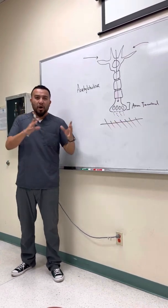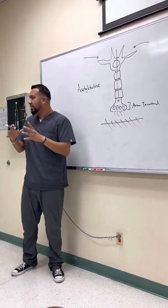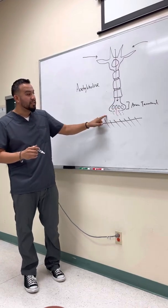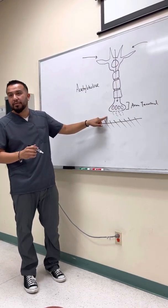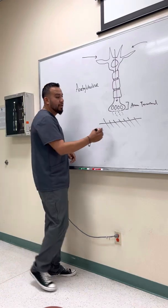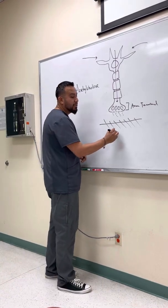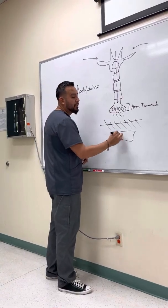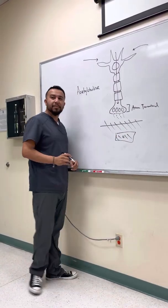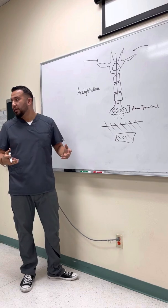All three of those elements must be intact in order for the signals to pass through the synaptic cleft — the space right here — so it can stimulate the muscles to do their thing and contract.